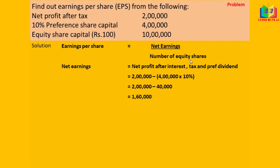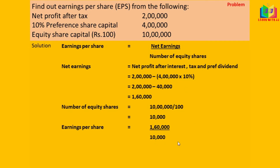Number of equity shares: equity share capital 10 lakh divided by face value 100 = 10,000 equity shares. Substituting in the formula: 1,60,000 ÷ 10,000 = 16 rupees. This is the earning per share.